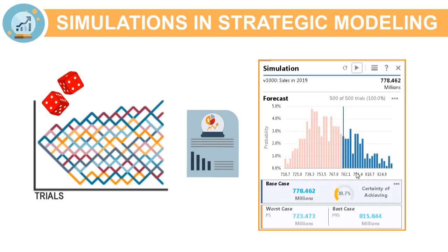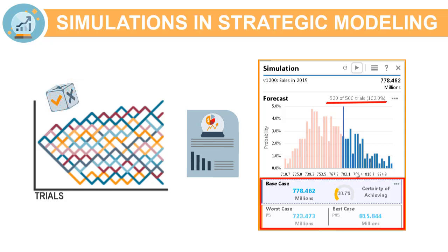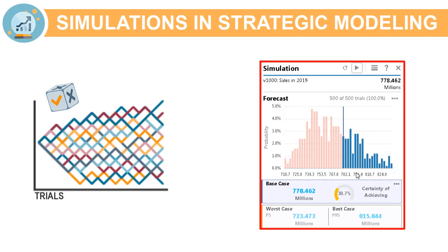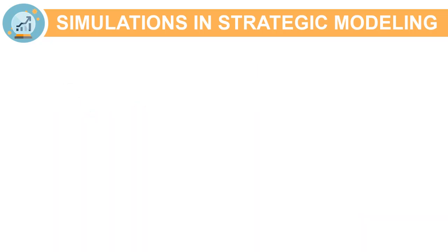In general, the more trials you run in a simulation, the greater the accuracy of the statistics and percentiles information shown in the forecasts. The final forecast chart reflects the combined uncertainty of the assumption cells in the forecast cell.